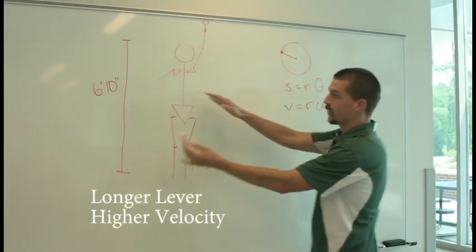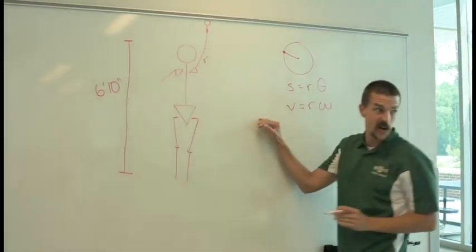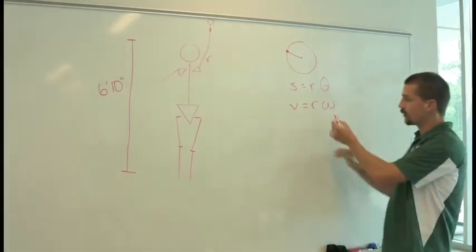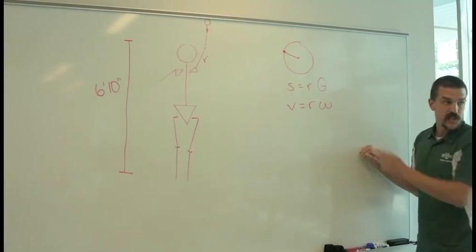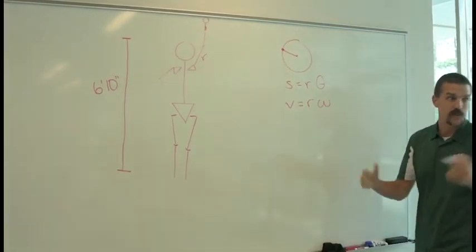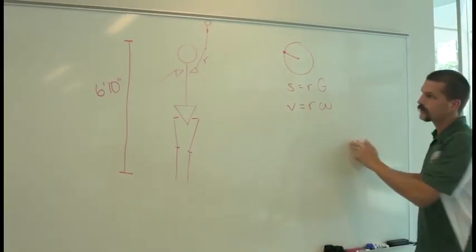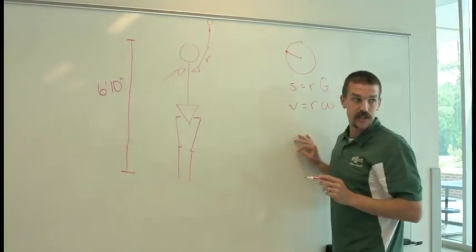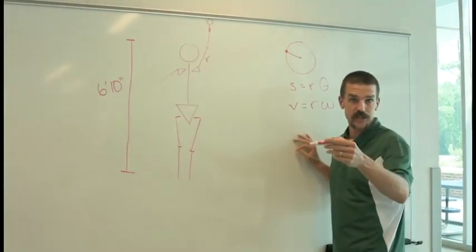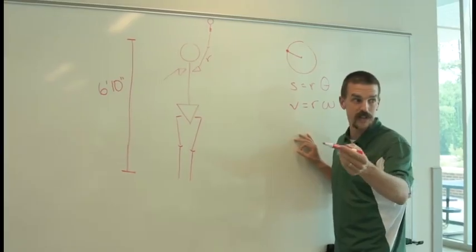So, 6'10" guy, a really big r. But if he can move through an angle at the same rate as everybody else, which he probably can get pretty close, then you're going to have a really high velocity for your racket, which means it's going to transfer a lot of energy to the ball when it contacts it.